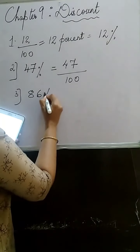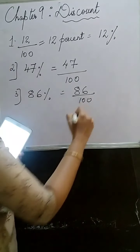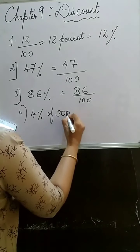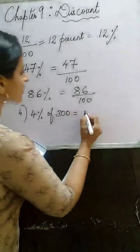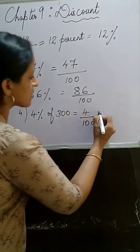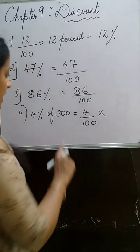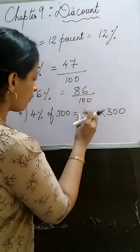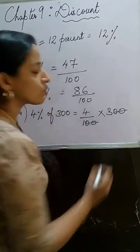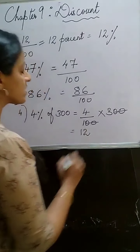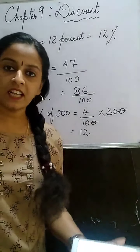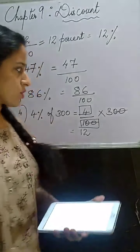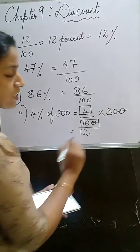Second sum: 47% means 47 upon 100. Third: 86% equals 86 upon 100. Fourth: 4% of 300 — percent given means 4 upon 100, and 'of' means multiply sign. So 4% of 300 = 4/100 × 300. Two zeros cancel, giving 4 × 3 = 12. Your answer is 12.